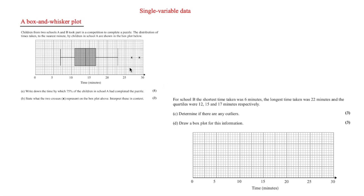In this video we are looking at single variable data, which includes box plots, histograms and cumulative frequency diagrams. The first thing we'll look at is a box and whisker plot, as data is often summarised in terms of minimum values, lower quartile, median, upper quartile and maximum values, and you can use a box and whisker plot to display these values.